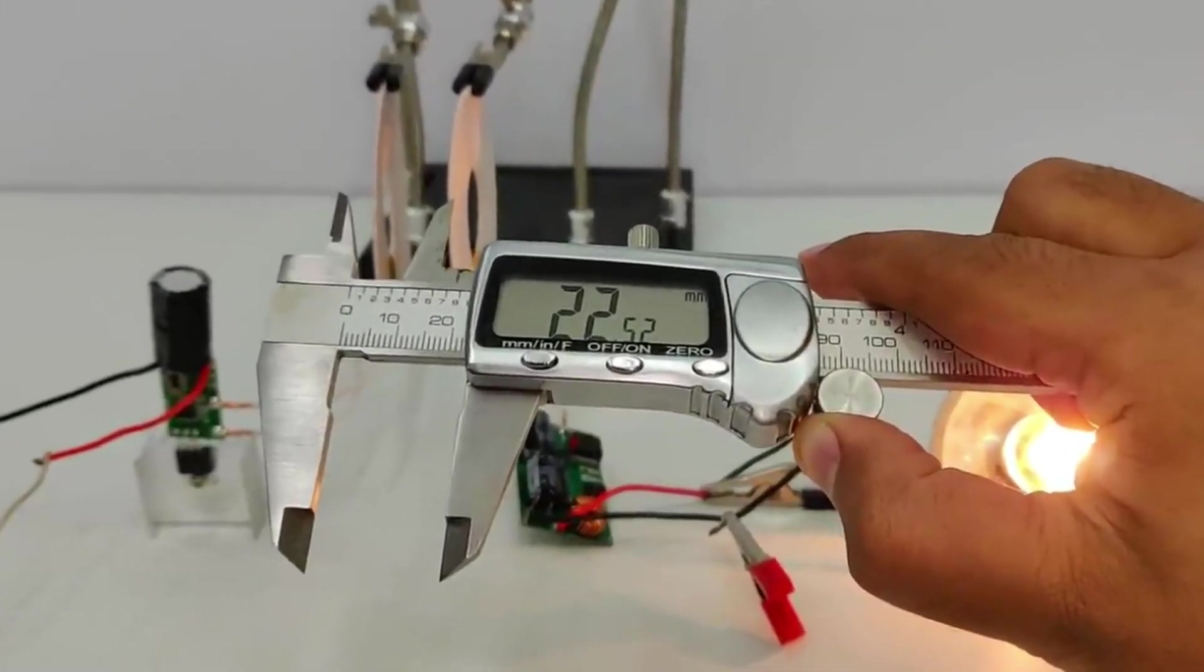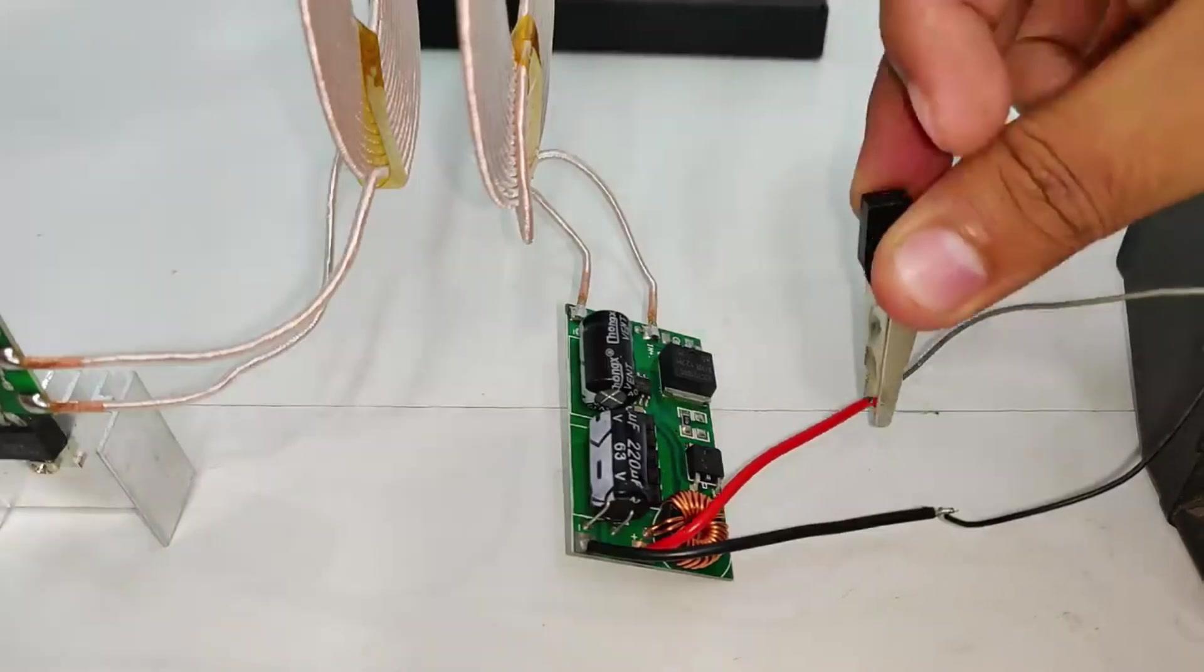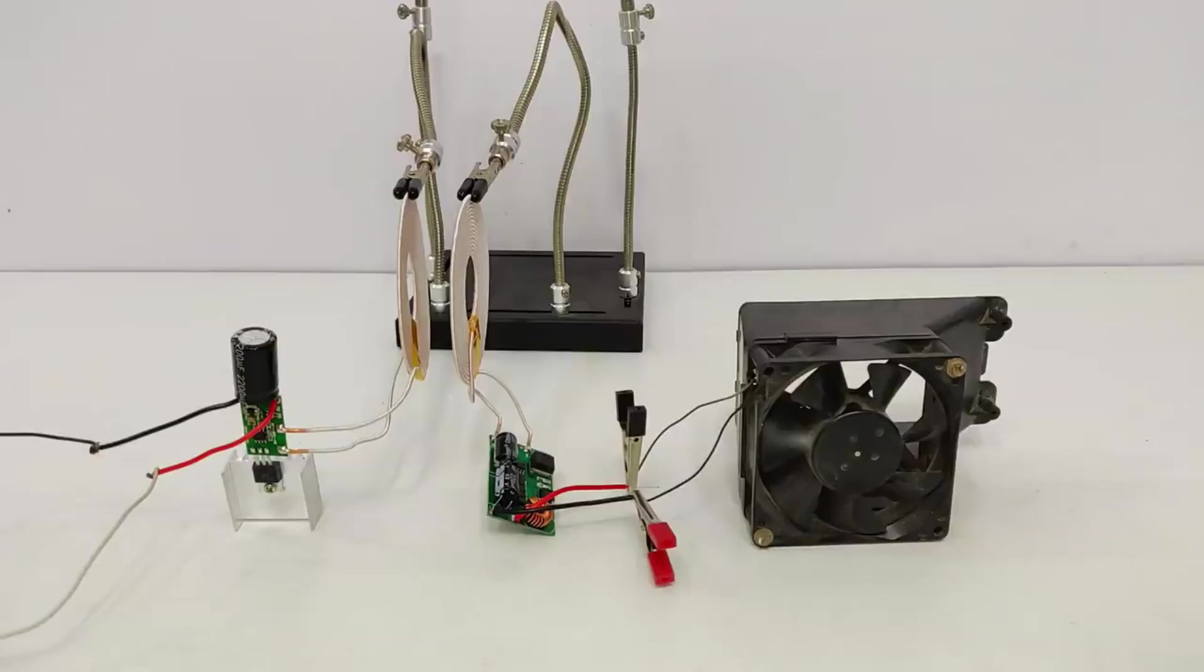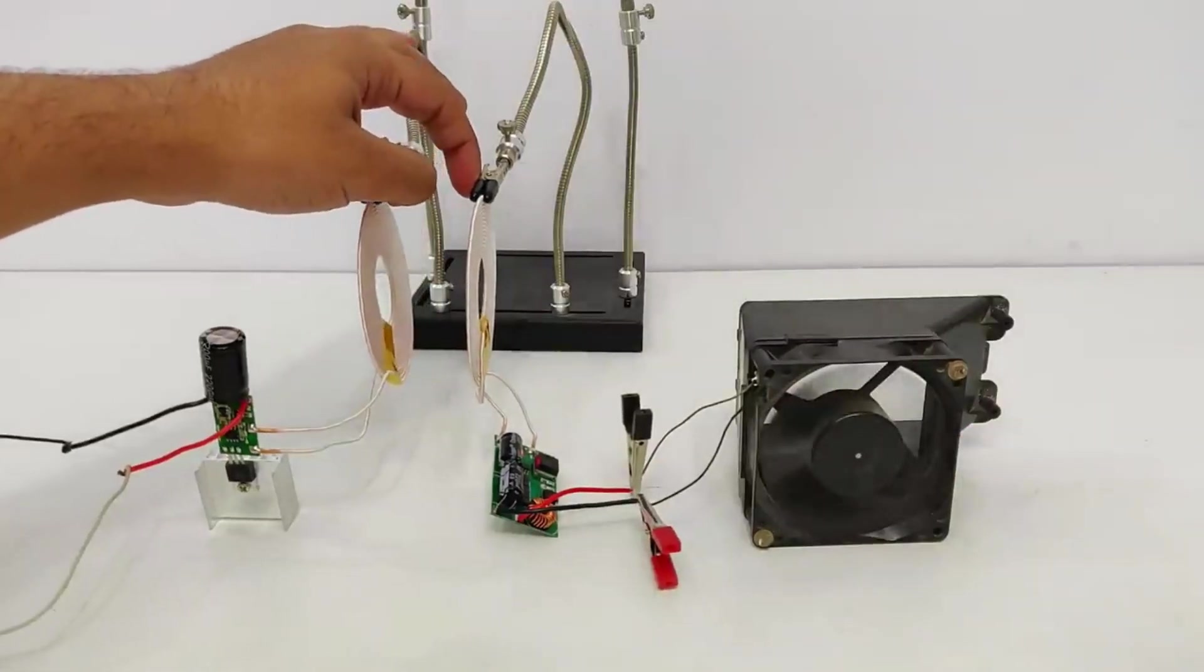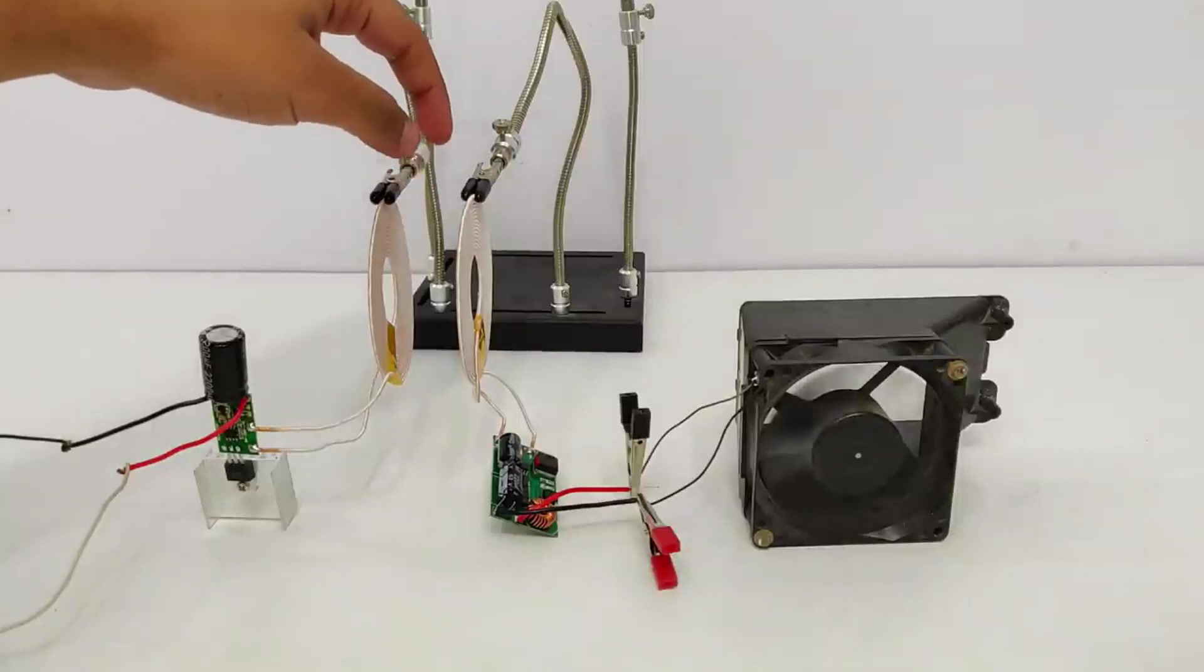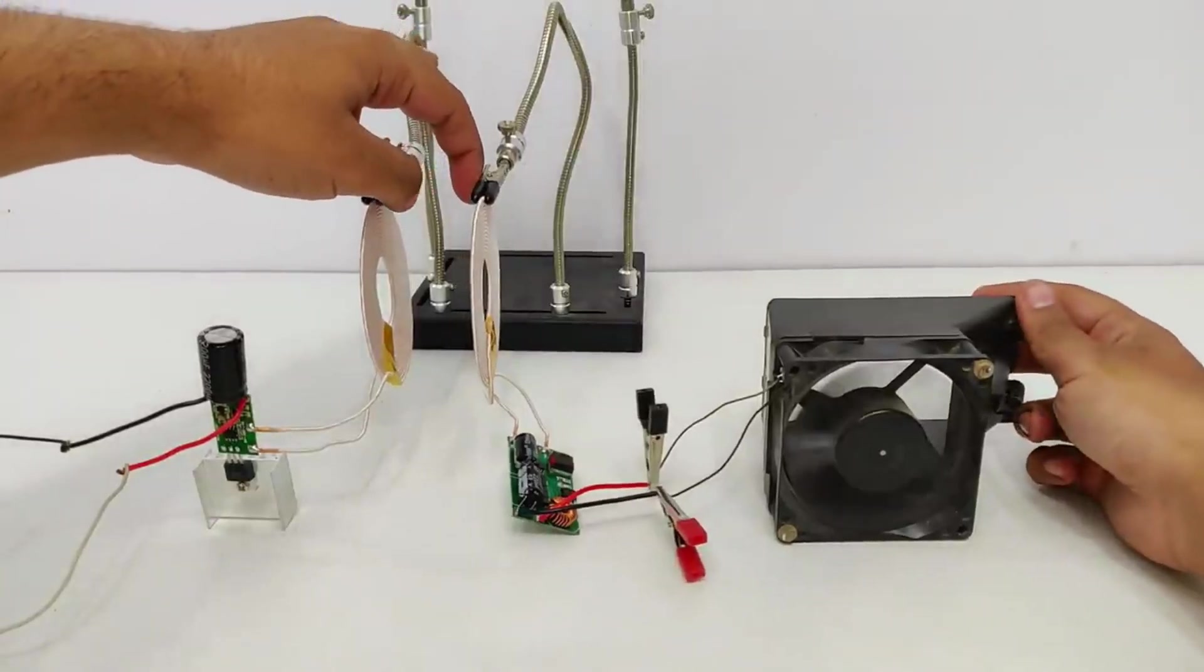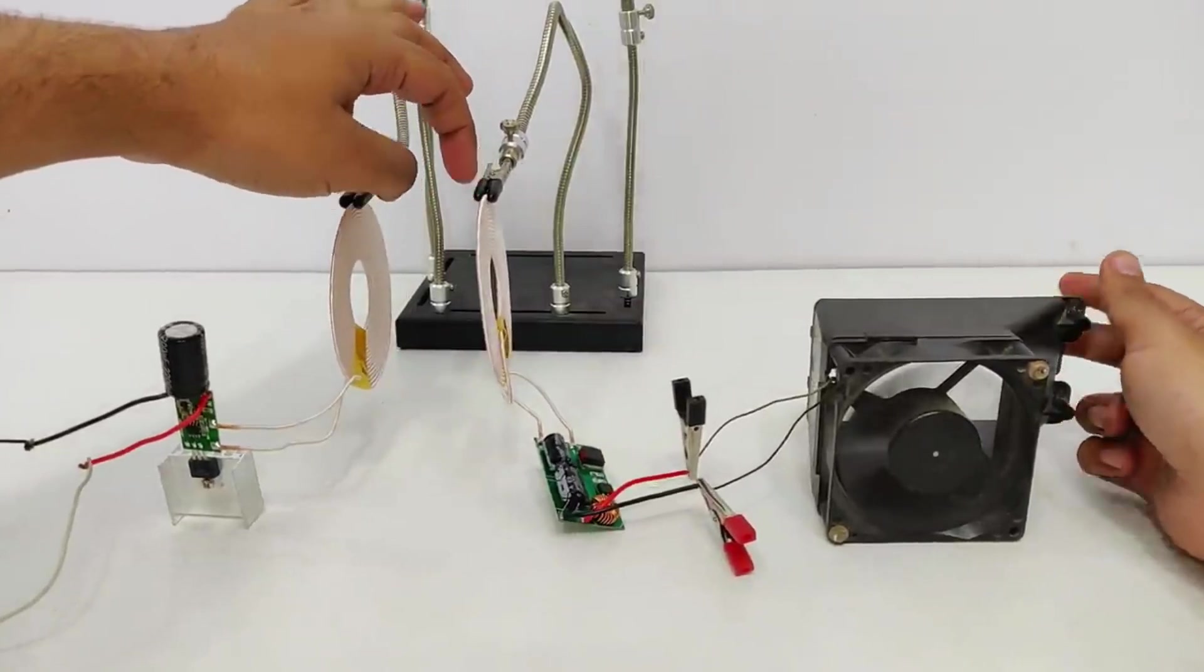Now let's try some smaller loads like a CPU fan. Turning the switch on. It's running. Let's increase the distance. And this time the distance is much more than before and it is still running. Let's see the maximum distance capability. Oh that is pretty huge.